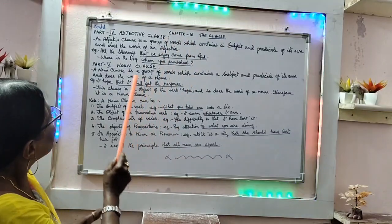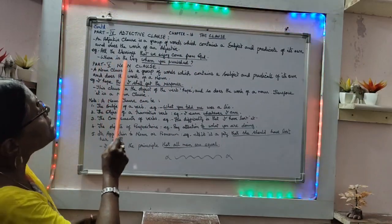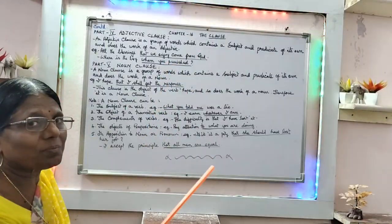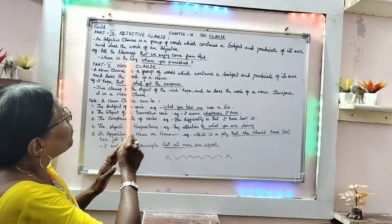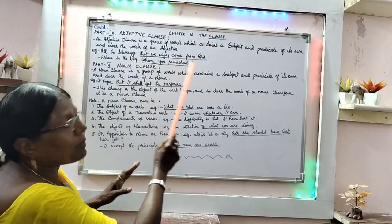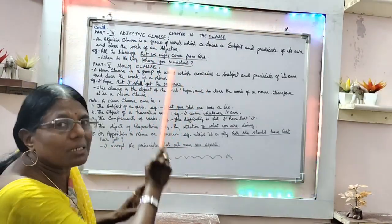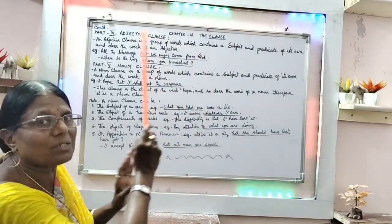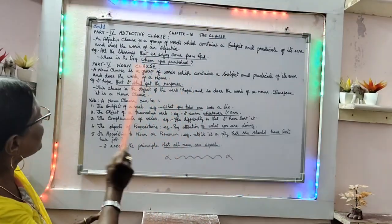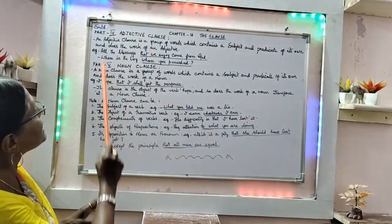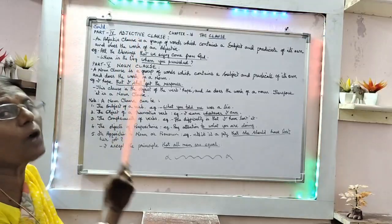Next example: 'Where is the boy whom I punished?' Here, 'whom I punished' is the adjective clause — it is the subordinate adjective clause. And next is part 5: noun clause.